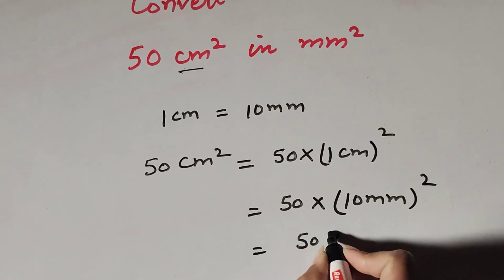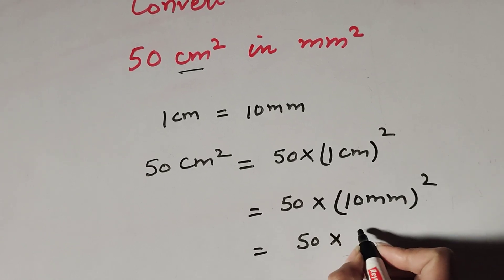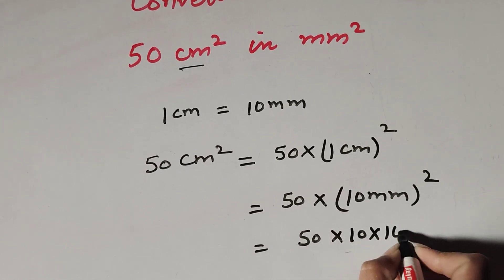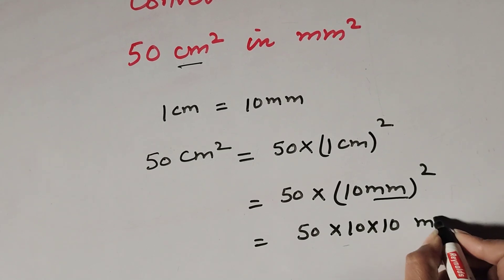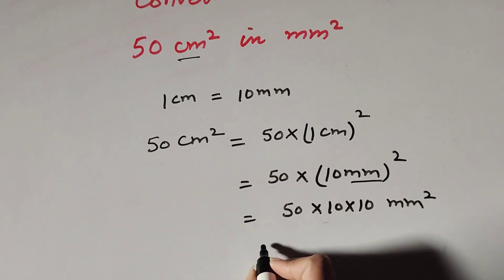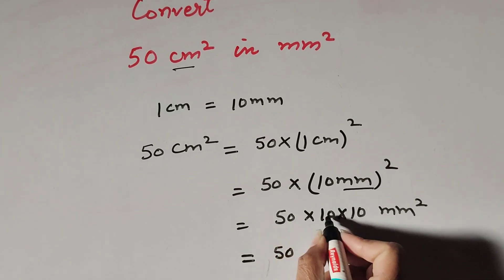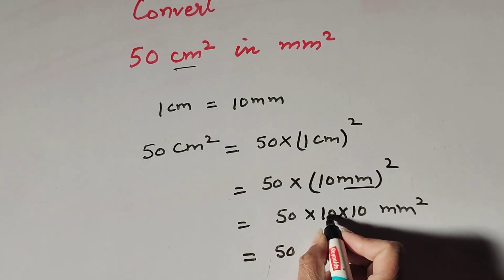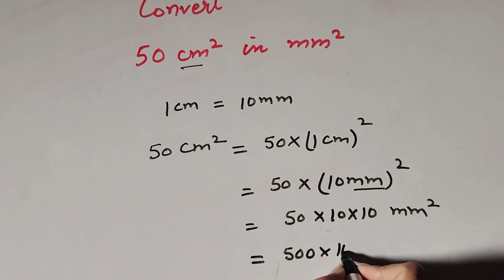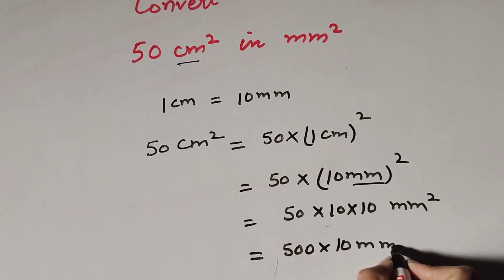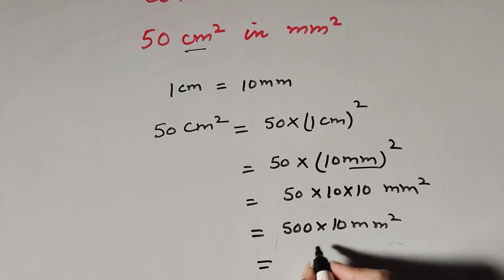This is equal to 50 multiplied by 10 squared, where 10 squared is 10 multiplied by 10, written as millimeter square. So 50 multiplied by 10 equals 500, and then 500 multiplied by 10 millimeter square.